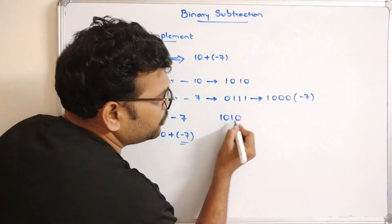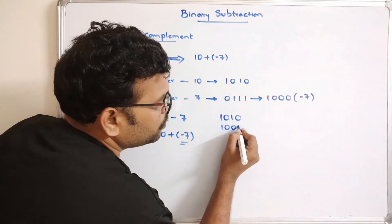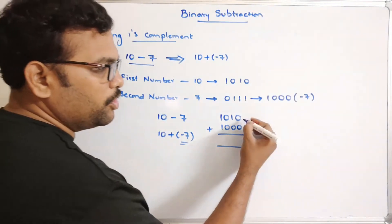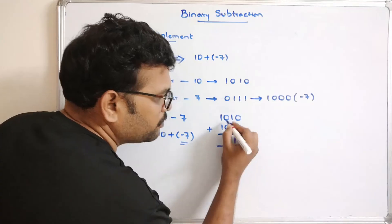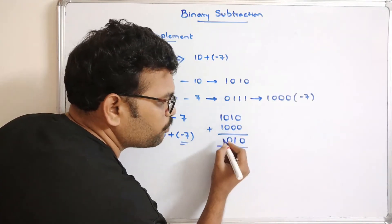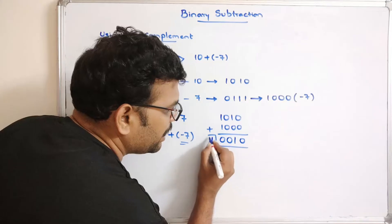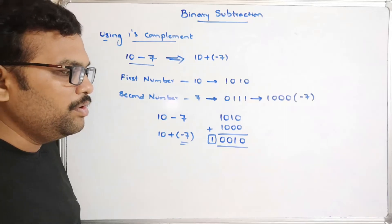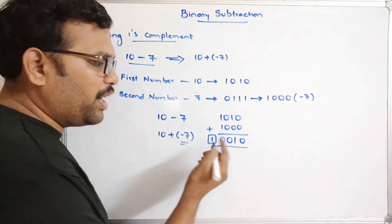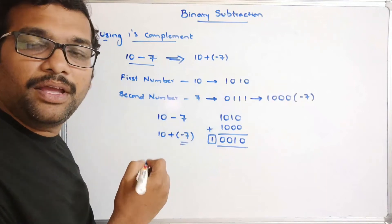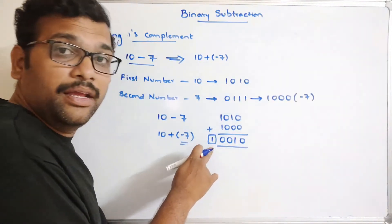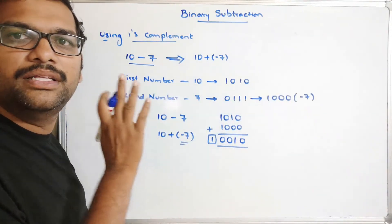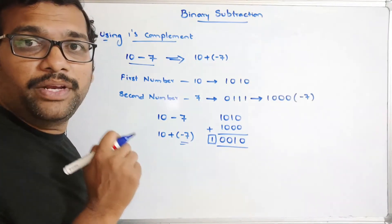Now we perform the addition between 10 and minus 7: 1010 plus 1000. Using binary addition: 0 plus 0 is 0, 1 plus 0 is 1, 0 plus 0 is 0, and 1 plus 1 gives 0 with carry 1. So we get a carry. After performing the addition, if you have a carry, just add that carry to the LSB so that we get the result of this subtraction.